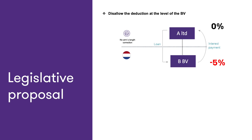The legislative proposal also provides for a rule regarding the on-shoring of assets from a group company to the Netherlands. In case the transferring company does not have to adjust the sales price of these assets to a fair market value, the Netherlands will refuse to provide a step-up for the fair market value of the assets of the acquiring company.